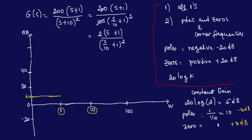We hit the corner frequency at 1. What do we have at 1? At 1 we have a zero. What did we say about the zero? We add 20 dB to the previous slope. This slope was 0, so we have a 20 dB slope for the zero. So we go ahead and draw that — a 20 dB slope until we hit the next corner frequency. You want to make sure this is actually a slope of 20.